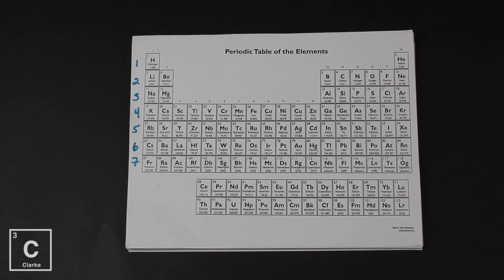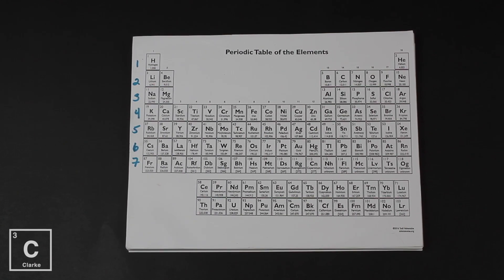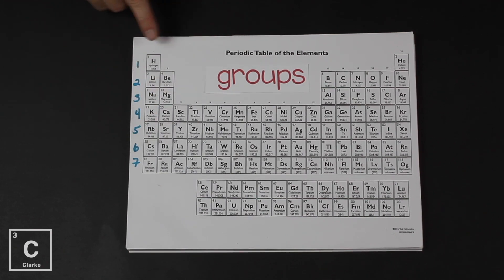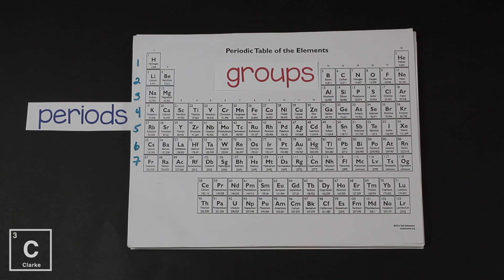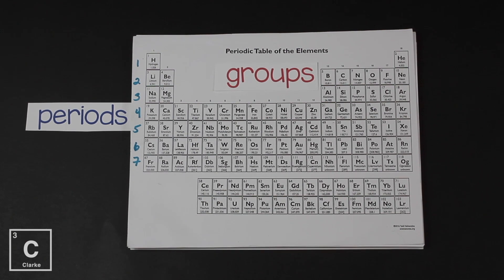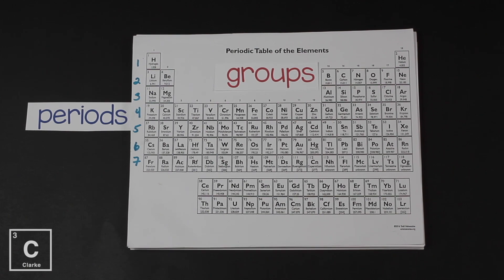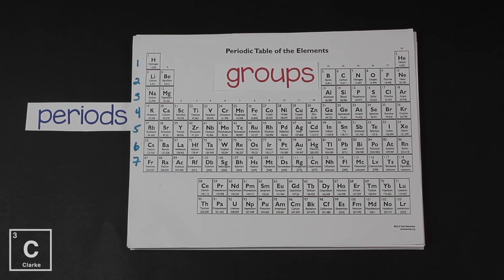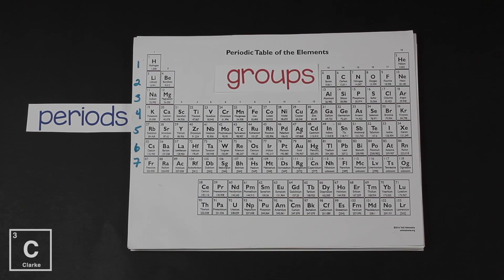The periodic table is made up of vertical rows called groups. These go up and down and there are 18 of them. The horizontal rows are called periods. I always keep these two words straight because sentences run horizontally on your paper and sentences often have periods after them. I know that's a different kind of period, but it always helps me remember the difference between periods and groups. Let's notice there are seven periods.